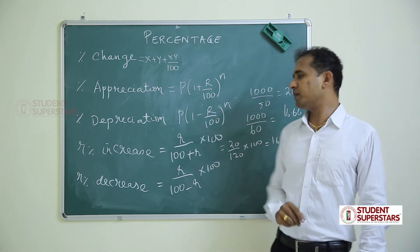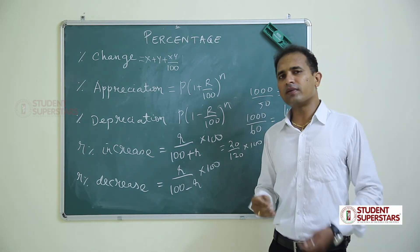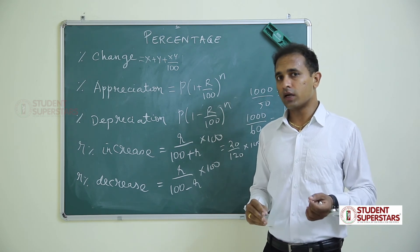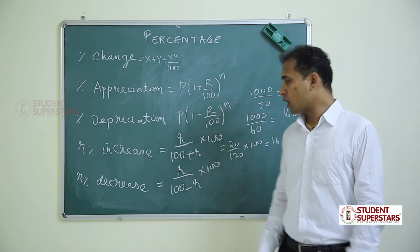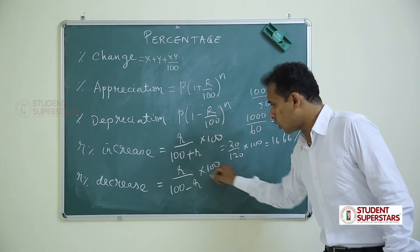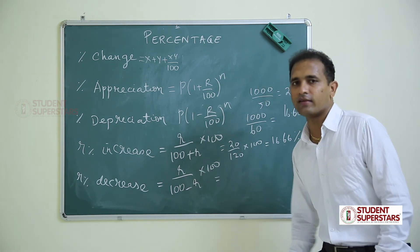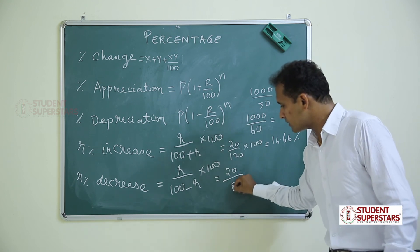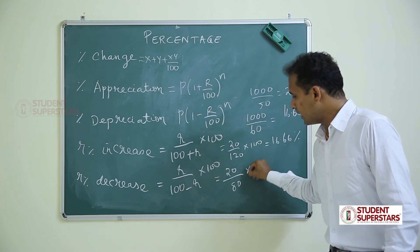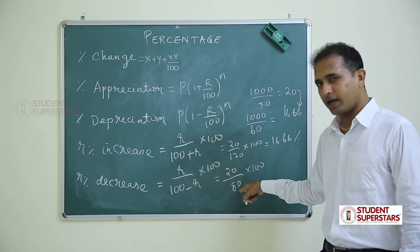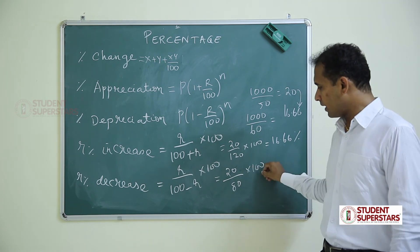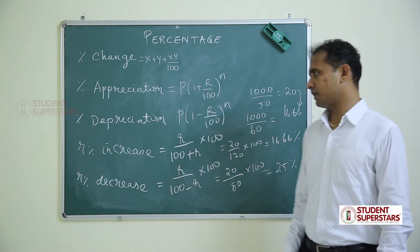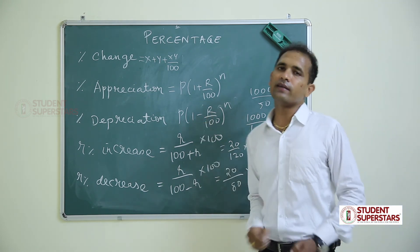If there is a 20 percent decrease in price, 50 rupees becomes 40 rupees. Using formula: r/(100 − r) × 100 = 20/80 × 100 = one-fourth of 100 = 25 percent. So consumption can increase by 25 percent.